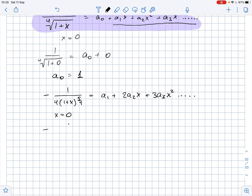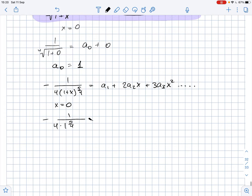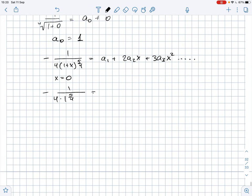Again, we plug x equals 0 and we get that negative 1 over 4 times 1 to the power of 5 over 4 equals a1 plus 0 because the rest of the terms will be 0 since we plug x equals 0 and we get that a1 equals negative 1 over 4.